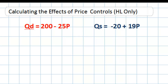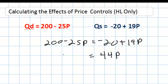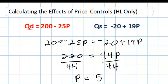Let's assume that the quantity demanded for baguettes is determined by the equation 200 minus 25p, and the quantity supplied is determined by the equation negative 20 plus 19p. Let's begin by calculating the equilibrium price. We set the two equations equal to each other: 200 minus 25p equals negative 20 plus 19p. Moving the prices to the same side, we get 44p equals 220, so the equilibrium price of baguettes in France is 5 euros.